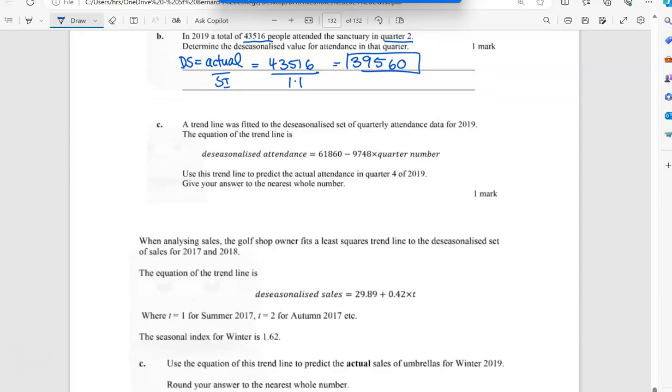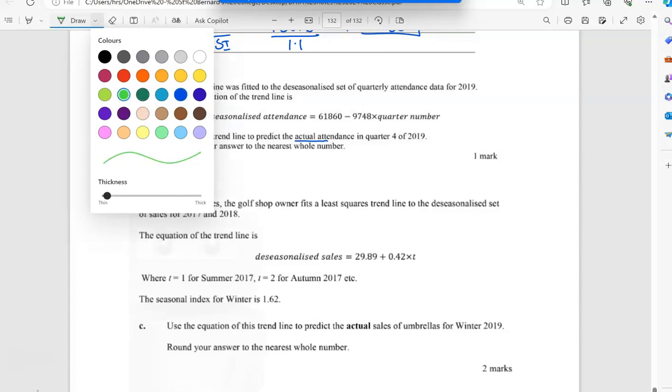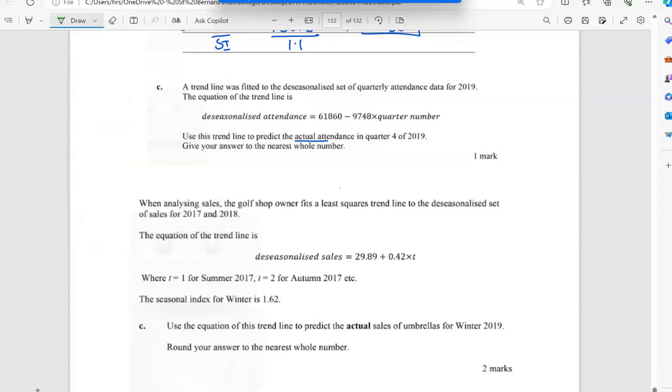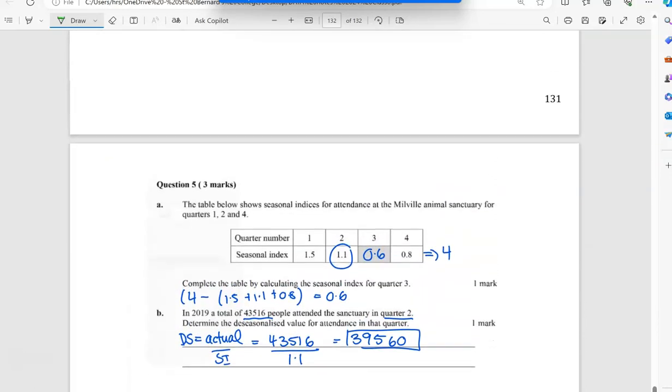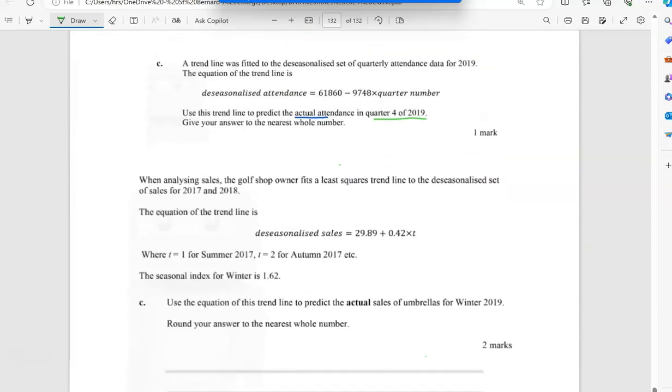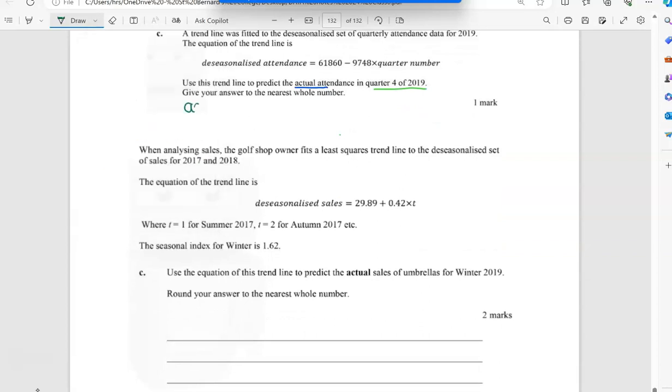A trend line is fitted to de-seasonalized data. Use this trend line to predict an actual value in quarter four of 2019. So actual equals de-seasonalized times seasonal index. The de-seasonalized I'm going to have to use that formula again because they gave that to me: 61,860 minus 9748 times quarter four.